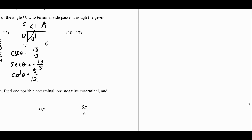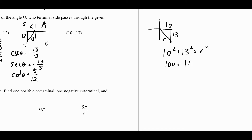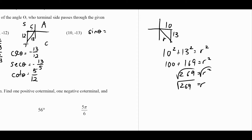For the last point, (10, 13): I don't know the hypotenuse, so I'll use the Pythagorean theorem. 10 squared plus 13 squared equals r squared — that's 100 plus 169, giving 269 equals r squared. So r equals the square root of 269. Sine of theta is 13 over root 269, but we rationalize it: 13 root 269 over 269.